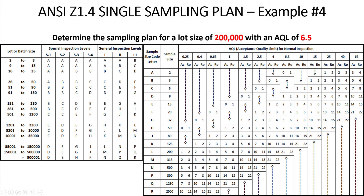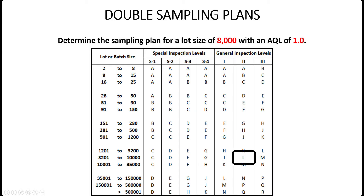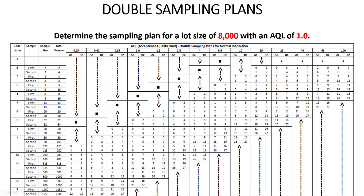Now let's move on to double sampling. Going back to the lot size of 8,000 with AQL 1.0, the sample size code letter remains L. In the double sampling table for code letter L, there's a first sample and a second sample, each of 125 pieces, for a cumulative total of 250 if both are taken — more than the single sampling plan of 200.